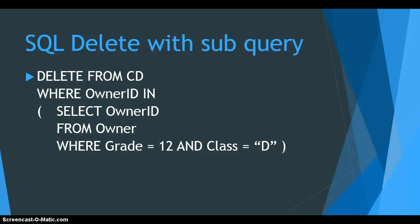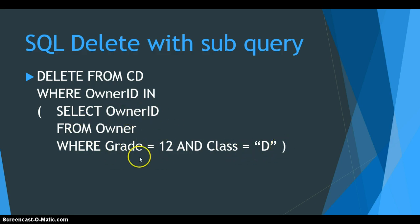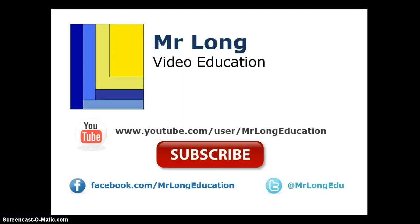To recap sub-queries: you can also use this with UPDATE statements if you want to update records based on criteria in another related table. The structure is: your WHERE clause uses owner_ID IN (...), and inside the brackets you write SELECT owner_ID FROM owner WHERE grade = 12 AND class = 'D'. The entire independent sub-query goes in brackets, and your WHERE clause checks whether the owner ID is found in that sub-query result.